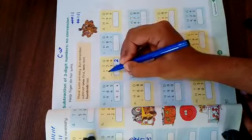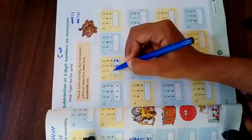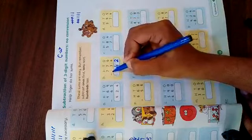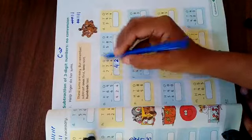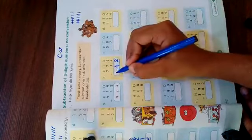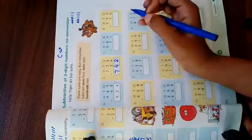Next, see. Next is seven. Seven is not written down below. And when nothing is written down, it means zero. Zero means nothing. So seven minus zero. So what is seven? Seven. Okay, son.